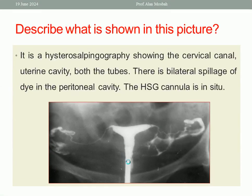This is the answer of the first question, as you see in the next slide here. Again, this is the cervix, this is the uterine cavity, this is the fallopian tubes — patent on both sides — with the spillage of the dye in the pelvis. And this is the Hysterosalpingogram cannula in place.